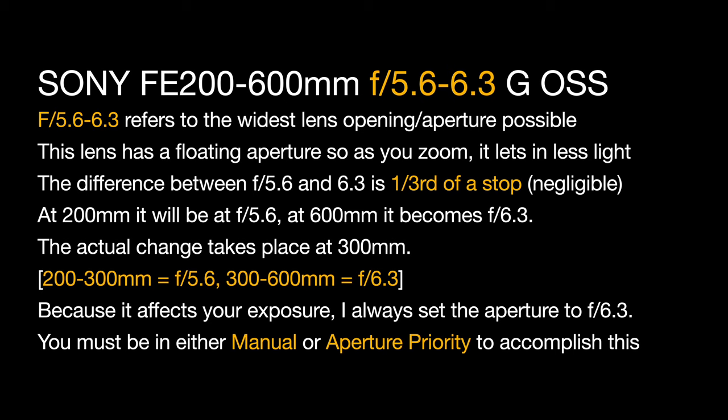The 5.6 to 6.3 refers to the widest lens opening, or aperture, that's possible with this lens. The Sony 200-600G has a floating aperture, so as you zoom, it lets in less light. The difference between 5.6 and 6.3 is just a third of a stop, which is negligible. At 200mm it will be at 5.6, at 600mm at 6.3. The actual change takes place at 300mm, so this lens is a 5.6 lens between 200 and 300mm, and then 300-600 becomes a 6.3.